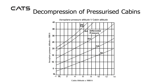Here's a graph of aeroplane pressure altitude in thousands of feet versus cabin altitude. There are a number of differential pressures shown on the graph ranging from 2, 4, 6, 8 to 8.6 maximum. You could choose a differential pressure for your aircraft — for example, 8.6 — and with a cabin altitude of 5,000 feet, you could see that you could fly at an aeroplane pressure altitude of 30,000 feet.